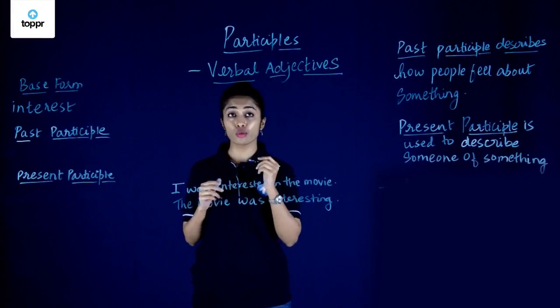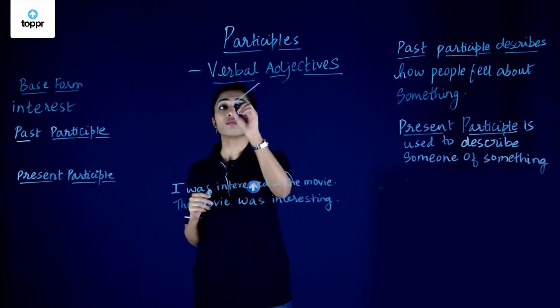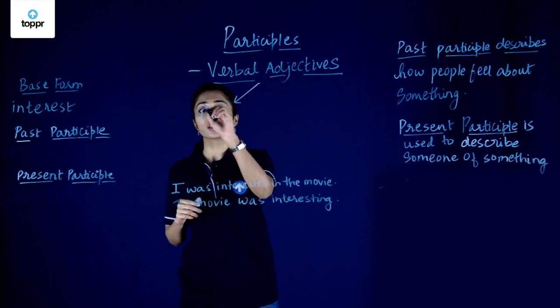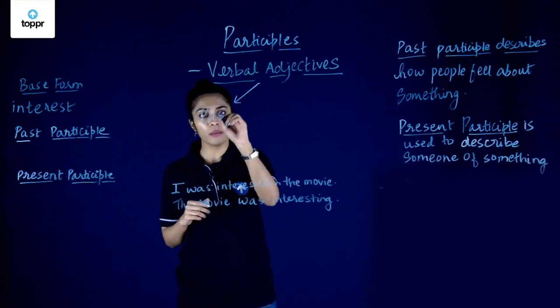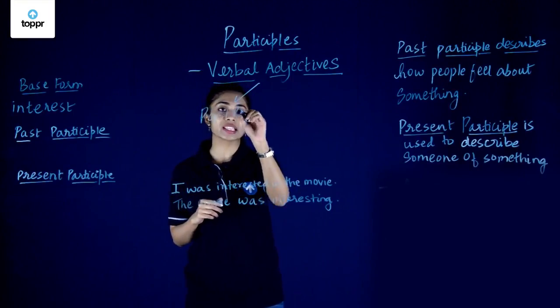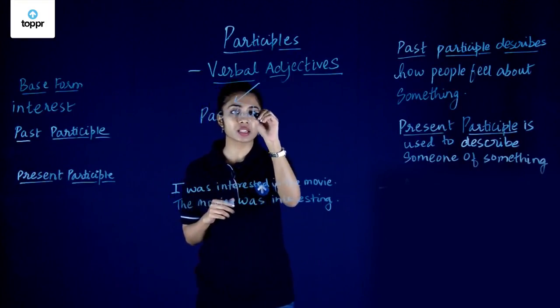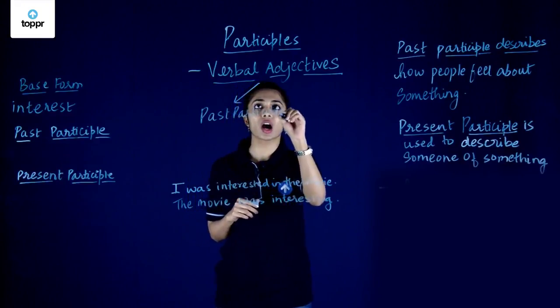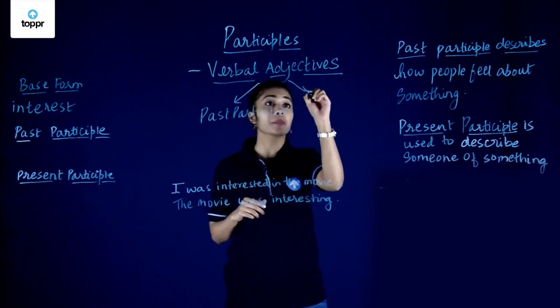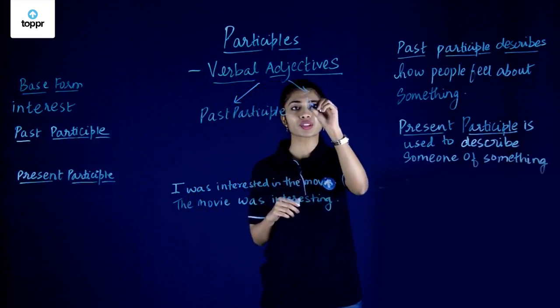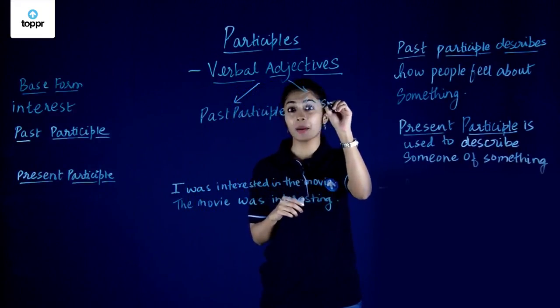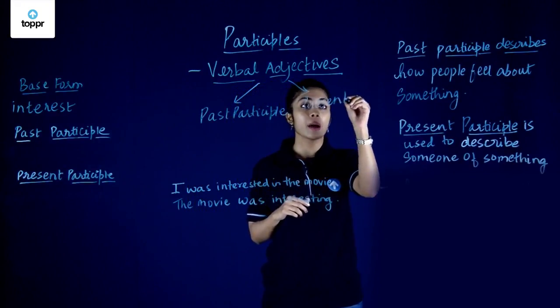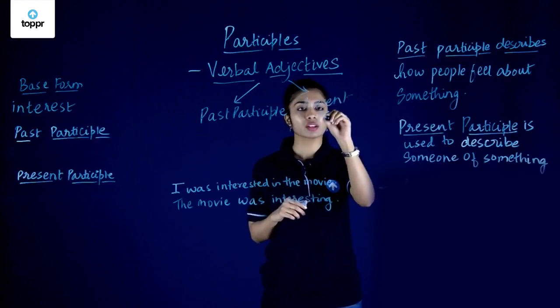Participles come in two forms: the past form, known as the past participle, and the present form, known as the present participle.